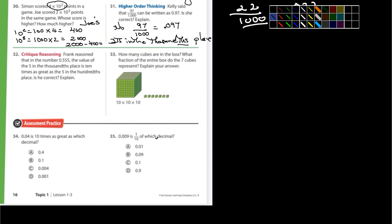Frank reasoned that in the number 0.555, the value of the 5 in the 1,000th place. So let's color code this. I'm going to go over here, and I'm going to do the 1,000th place. And I'll do that in green right there. Oh, maybe it's going to be too, yeah, I think my highlighter is too thick. Let's do this. 1,000th place. I'm going to circle it in green.